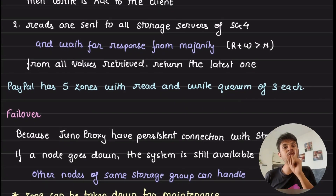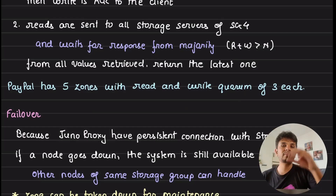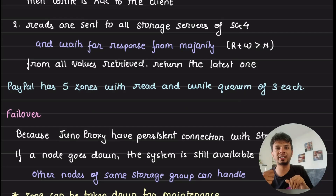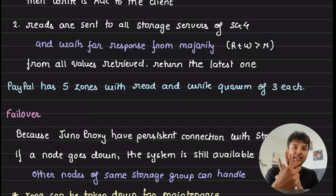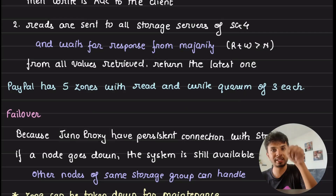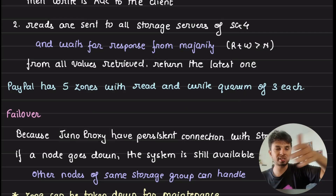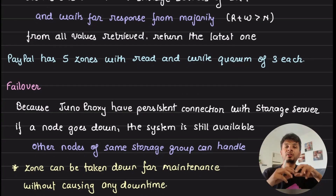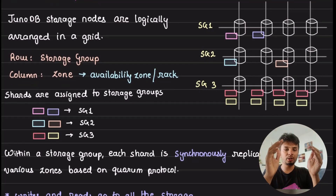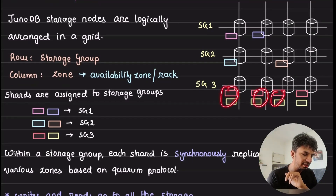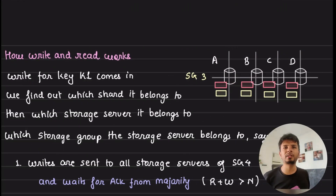This ensures data is always stored redundantly, and even if a node goes down there is no data loss because other nodes can handle it. On reads, waiting for a majority ensures the latest value is always returned — because there is an overlap between your write majority and read majority. If you have five zones and write to at least three and read from at least three, there will always be at least one server holding the latest copy. This grid is a very elegant way to visualize redundancy and how you guarantee read quorum and write quorum.